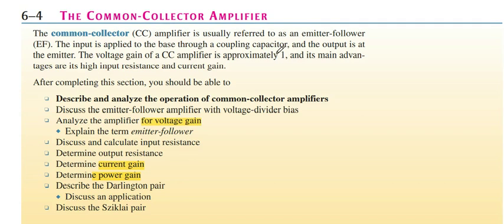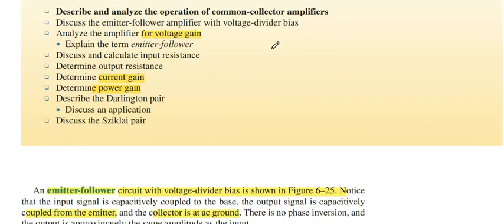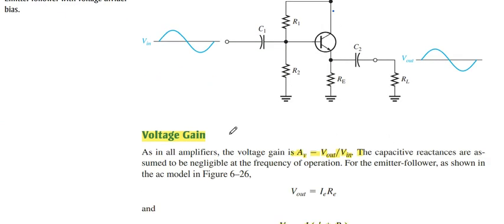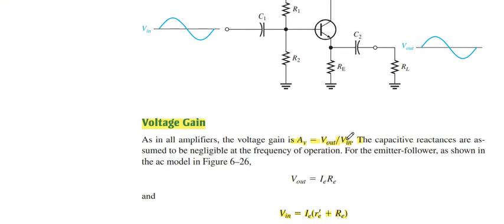Today we start common collector amplifier. The common collector amplifier is not very different from the common emitter amplifiers. Let's see what is a common collector. In the circuit, we get output across emitter through the couple capacitors. The voltage gain is Vout divided by Vin.